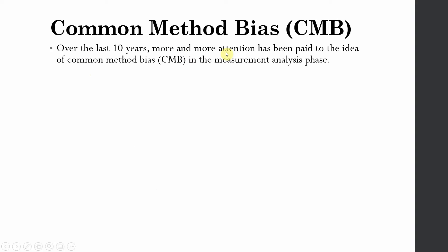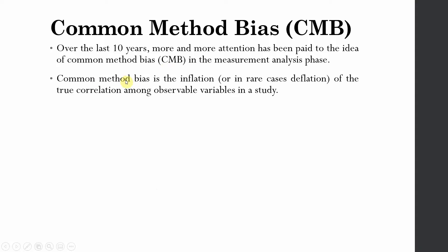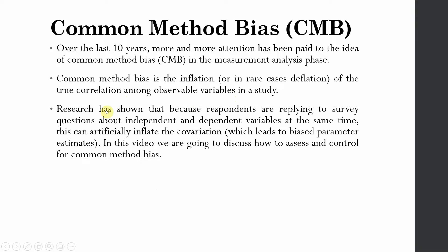Over the last 10 years more and more attention has been paid to the idea of common method bias in the measurement analysis phase. Common method bias is the inflation, or in rare cases deflation, of the true correlation among observable variables in a study. Research has shown that because respondents are replying to survey questions about independent and dependent variables at the same time, this can artificially inflate the covariation, leading to biased parameter estimates.